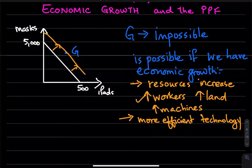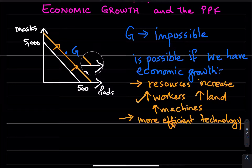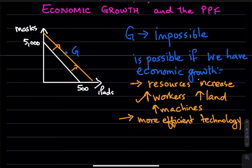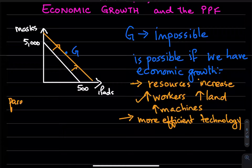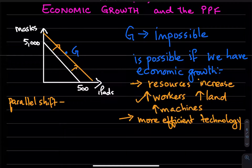So if there's better technology in general, you might see a parallel shift where we are able to produce more goods and services — represented by point G. With a parallel shift, we are still assuming that the trade-off between the two goods is the same.